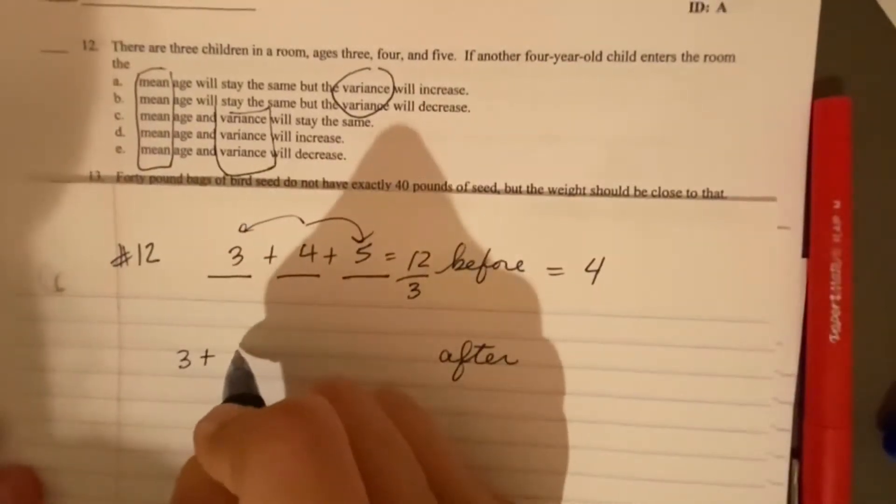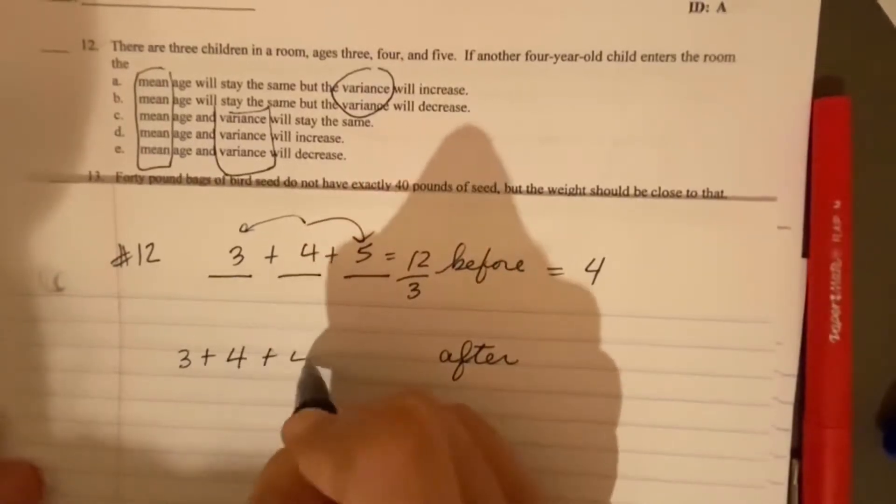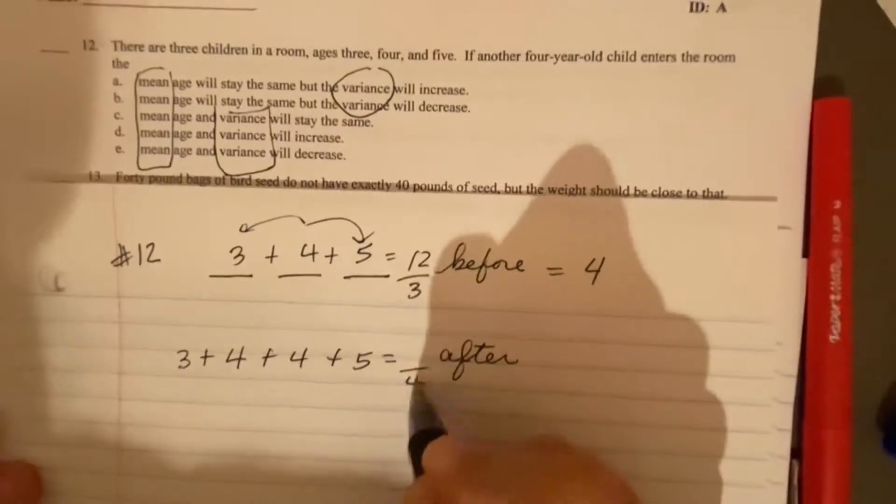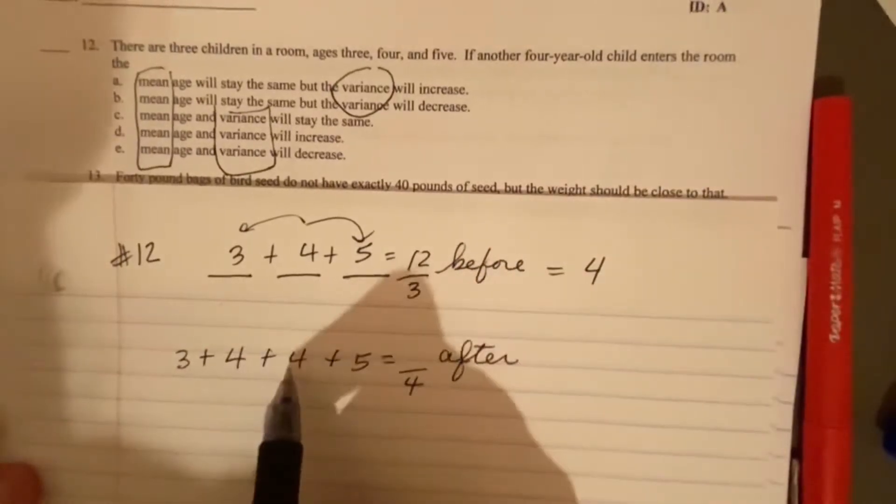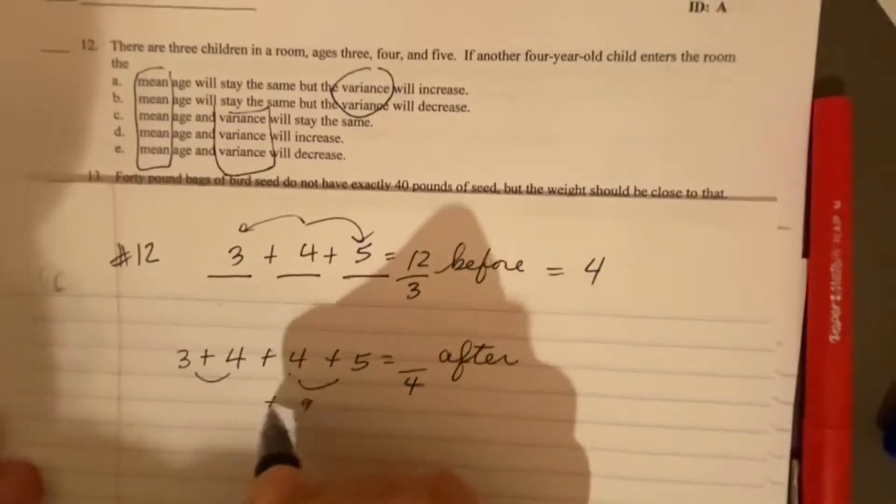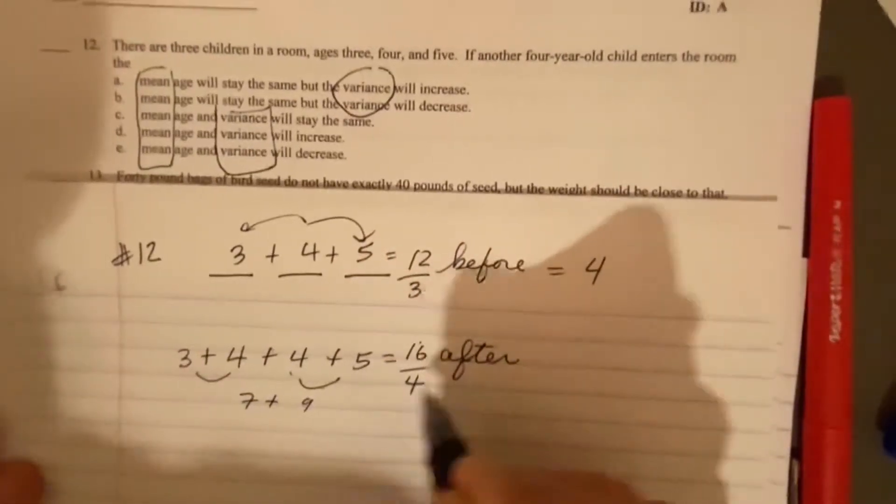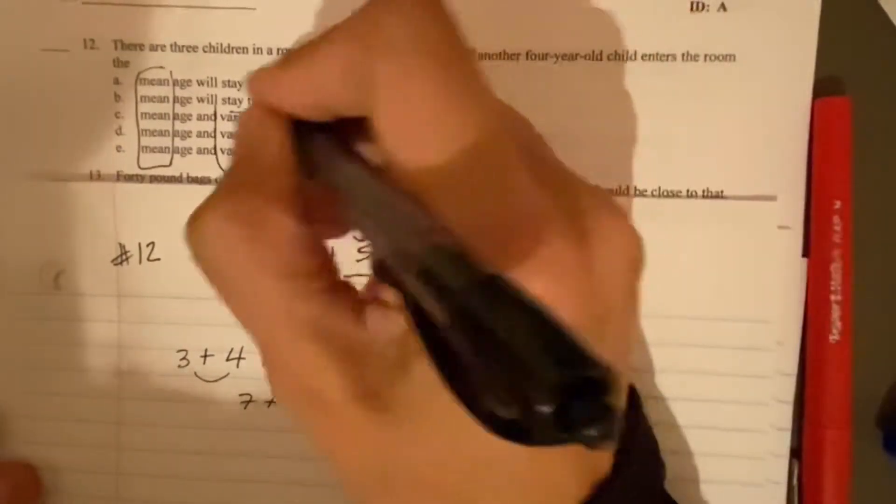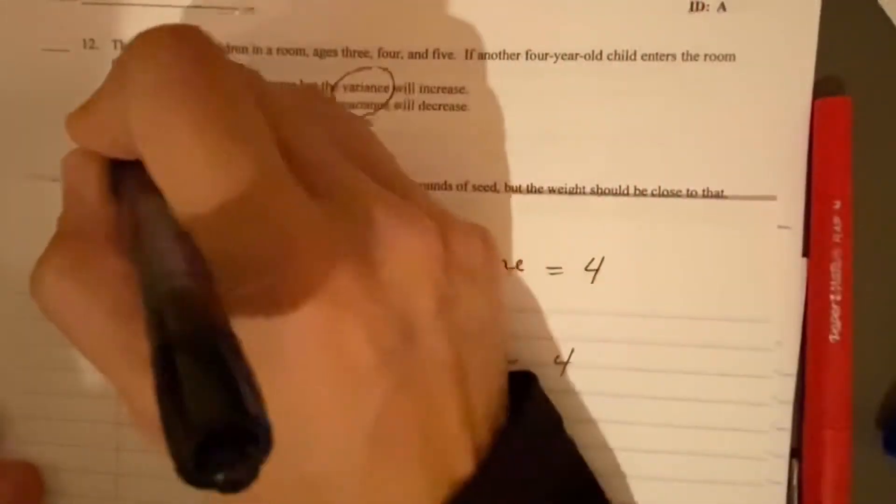When we have a four-year-old enter the room, we add up these numbers and we divide by four because there's four people there. So we got nine and seven, 16, 16 divided by four is four. So it looks like the mean age will stay the same.